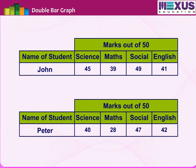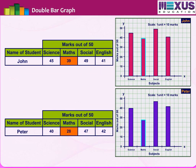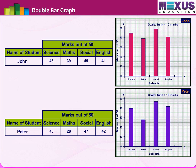If we have two collections of data and need to compare them, we would need two graphs. But it would become difficult to compare them by looking at them one after the other. For such cases, there is another method of representation called a double bar graph.